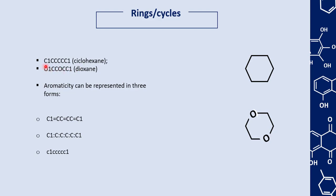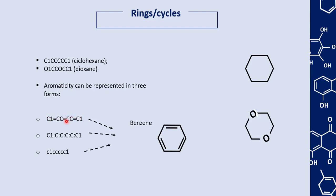After the first atom of the ring we put number 1, and after the last atom of the ring we also put number 1. We can also represent aromatic rings. Aromatic rings are rings with alternating double and single bonds. To represent them, we have three forms: in the first form, we put single bonds interspersed with double bonds using equal signs; in the second form, we put a colon between the carbon atoms; and in the third form, all atoms of the ring are written in lowercase. Here we can see that all carbon atoms of the benzene ring are represented as lowercase 'c'.